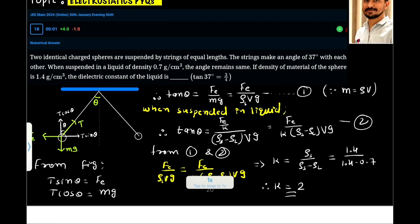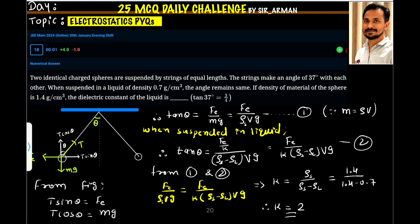If you take the ratio, T and T will get cancelled. Sine theta by cos theta is tan theta equals Fe by mg. Fe is the electrostatic force and M is mass, which equals density into volume. So density of sphere into volume of sphere into g. When these spheres are suspended in liquid, what happens?